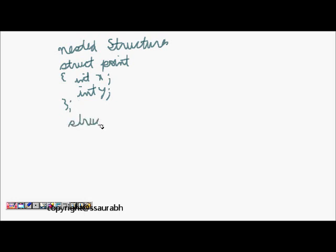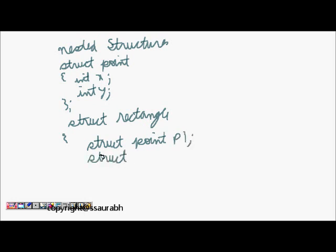Then when we define a rectangle, struct rectangle can have struct point p1 and struct point p2. This defines a nested structure - point p1 and point p2 both are structures.